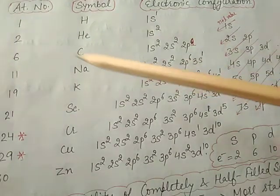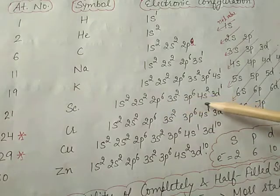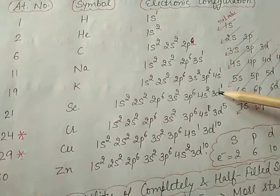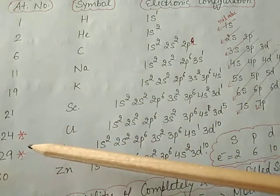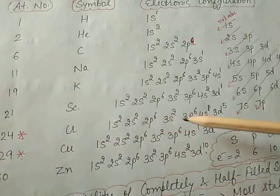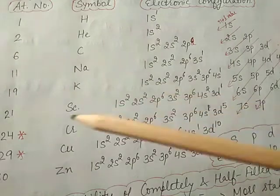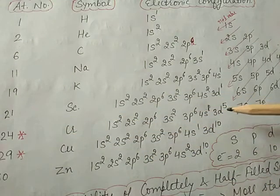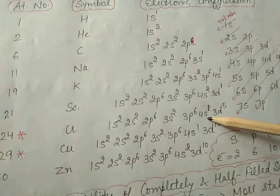Atomic number 21, scandium: 1s2 2s2 2p6 3s2 3p6 4s2 3d1, because only one electron is left for 3d after 20 electrons are filled. Atomic number 24, chromium — this is an exceptional case: expected 4s2 3d4, but due to the extra stability of half-filled configurations, it becomes 4s1 3d5.